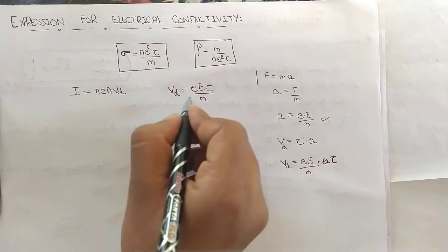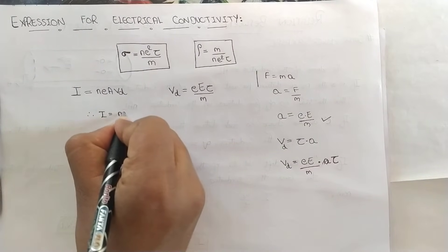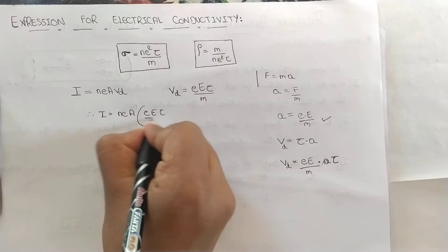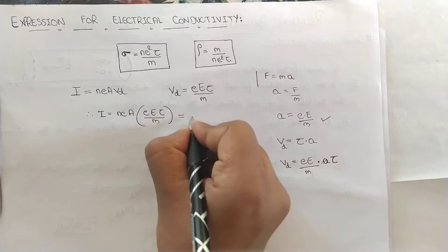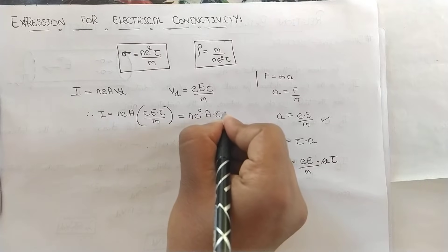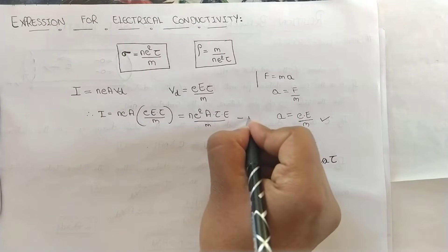Now substitute this in current equation. I will be equal to NEA, E into electric field into average time divided by M. Now what this gives? This gives N E square A into average time multiplied by electric field divided by M. Consider this as equation 1.